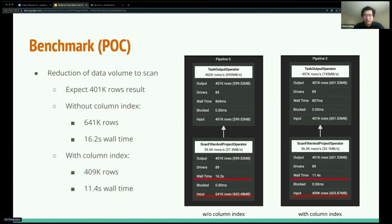As you can see, without column index it had to scan 641k rows using a total of 16 seconds of wall time. While with column index, it only needed to scan 409k rows with 11 seconds wall time. So this was like a 30% wall time reduction and 36% row reduction. Just good improvement.